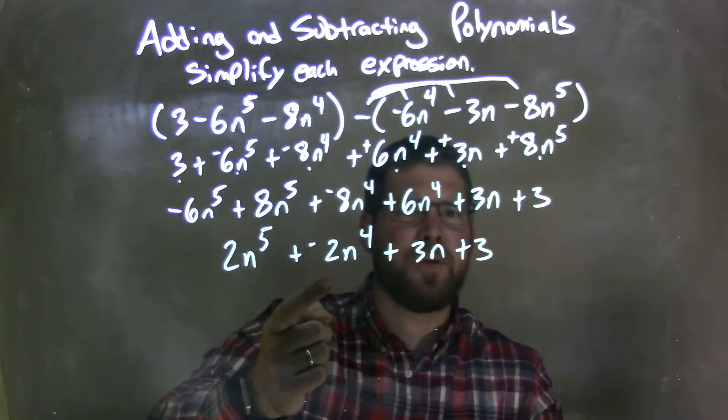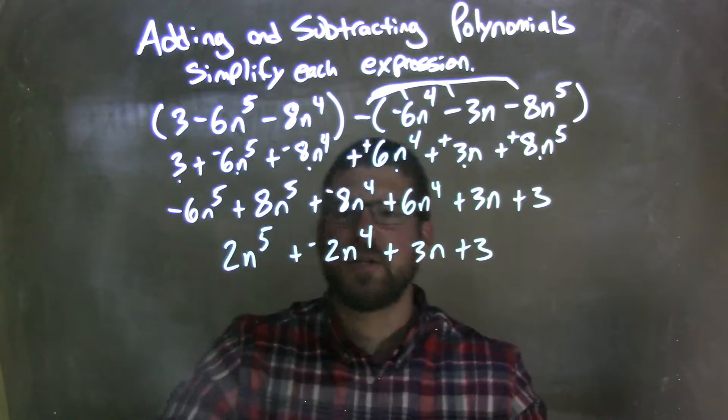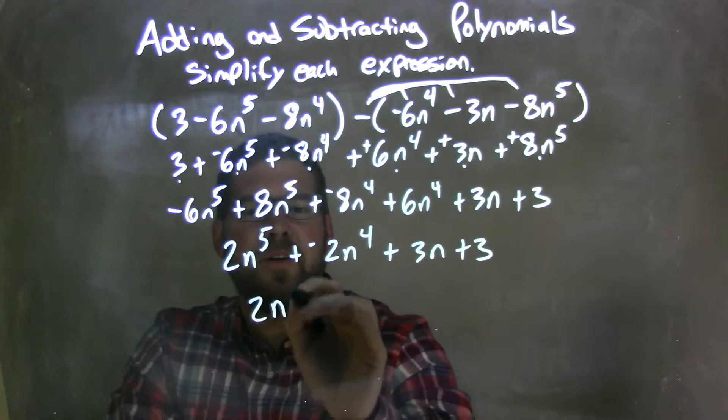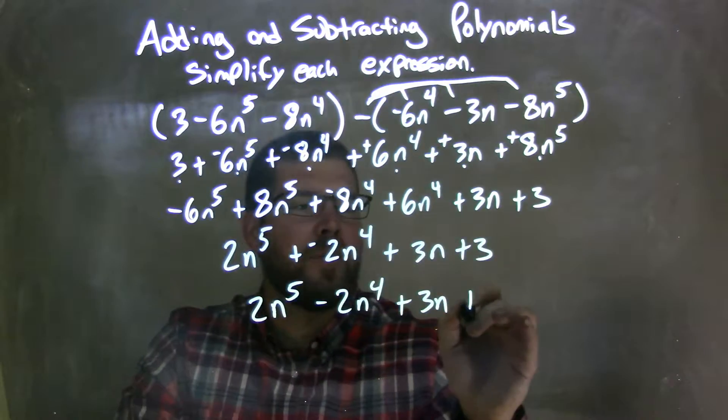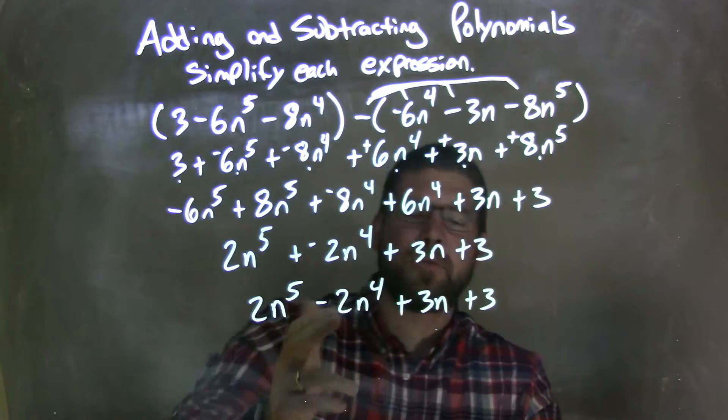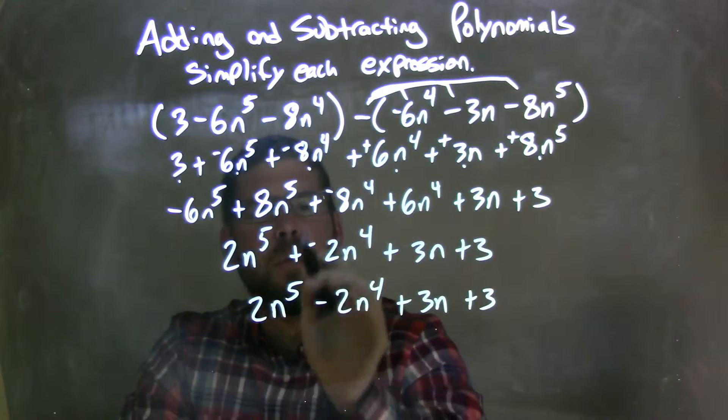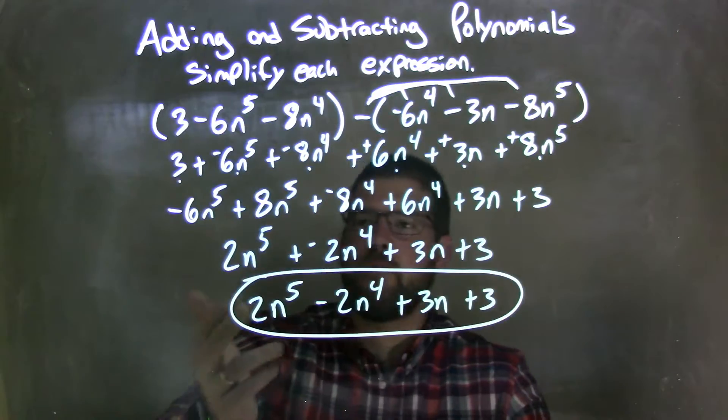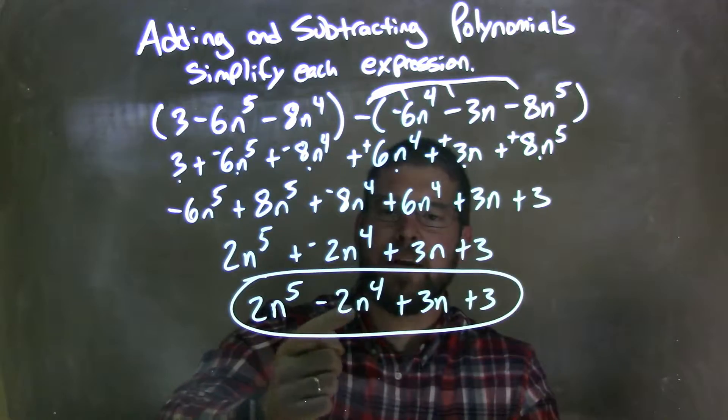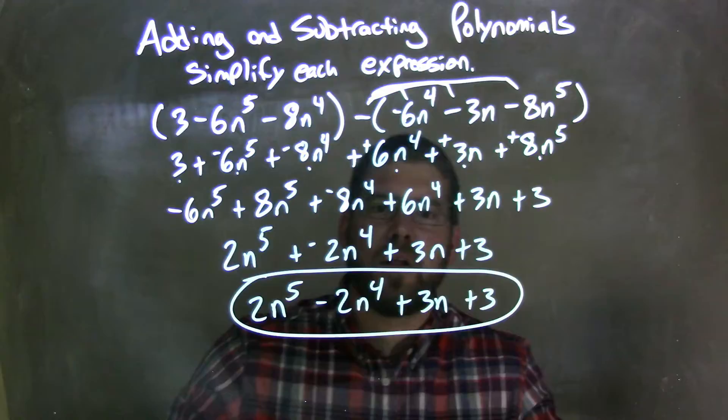Now I'm going to rearrange this. I don't like to have plus and negative. I'm going to make it subtraction. So we have 2n to the 5th minus 2n to the 4th plus 3n plus 3. And I only like it to be a subtraction in my final answer. When I'm still simplifying, I like to add in a negative. And that's just my own personal preference there. And there we have it. We have our final answer here of 2n to the 5th minus 2n to the 4th plus 3n plus 3.